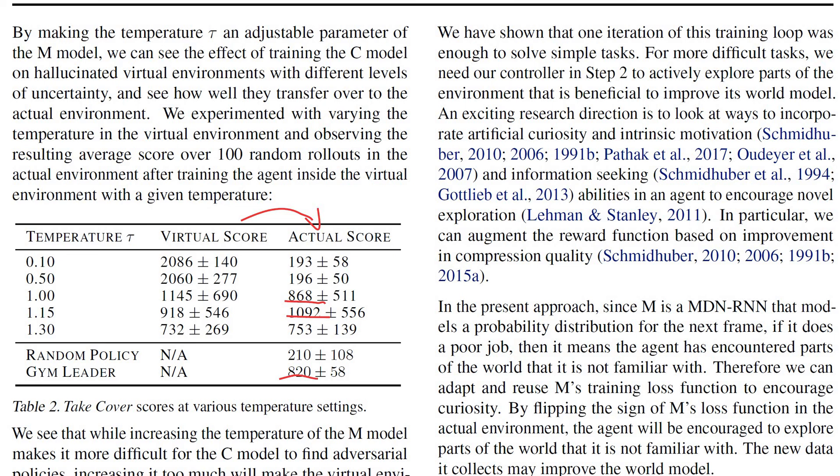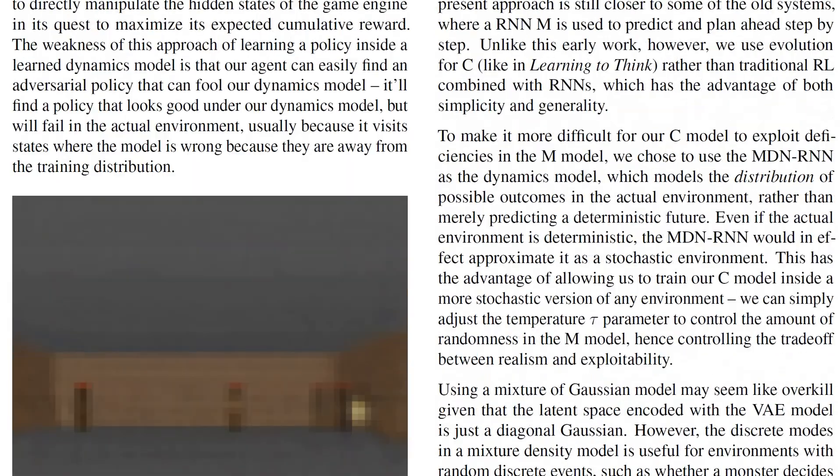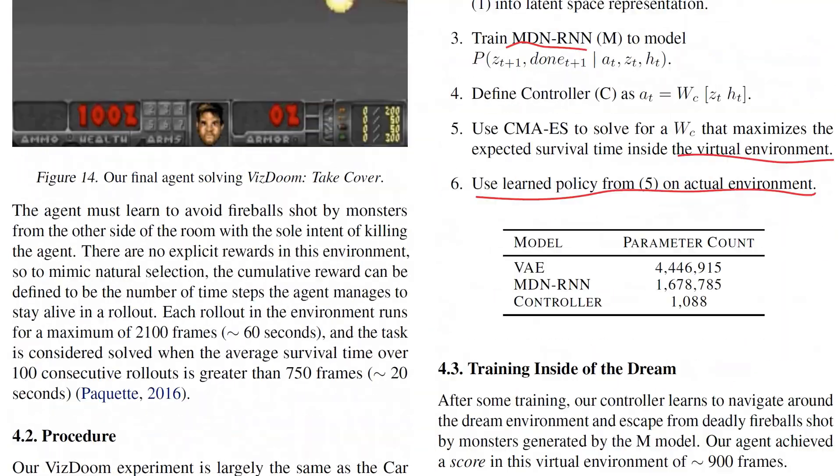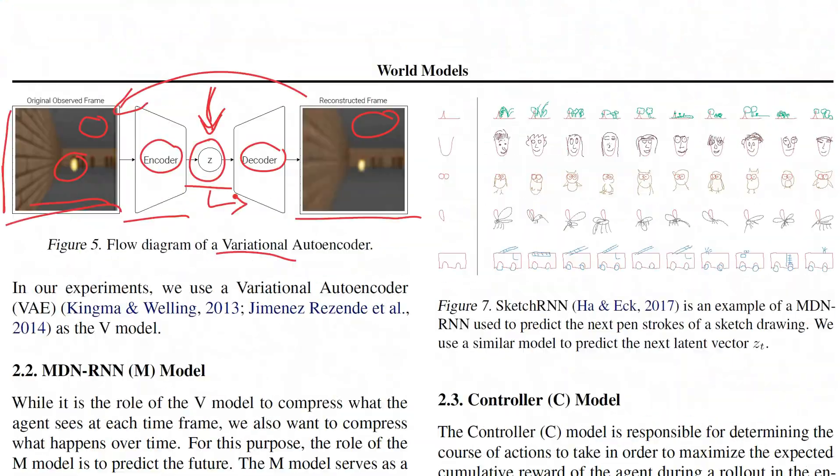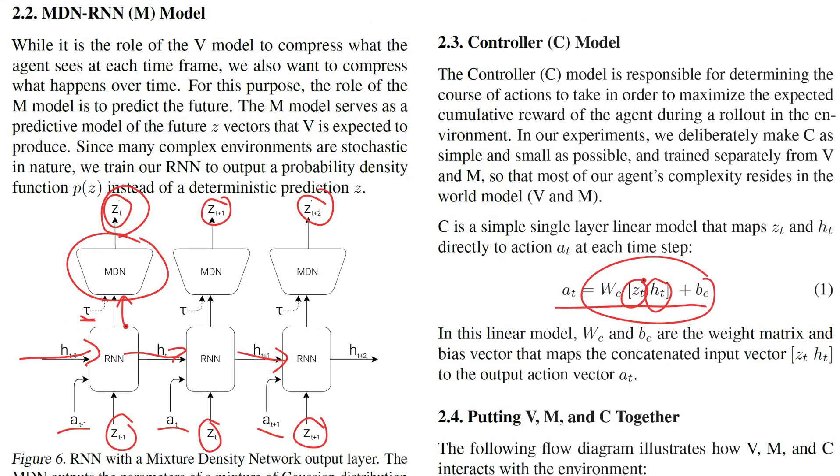So what this means is you can train using this imagined model. And then it will actually transfer. But there's a crucial thing, and that is this temperature thing here. You can see, a lot of times, they actually don't manage to reach a good score if this parameter is wrong. What does this parameter do? This parameter controls, as we discussed, the stochasticity of the model. Basically, the environment model doesn't directly imagine a future state, but it imagines a distribution over future states. And the higher this parameter, the more stochastic this distribution is. Basically, the more uniform, I guess, the more entropy you have in these future states. We've seen this temperature parameter here.